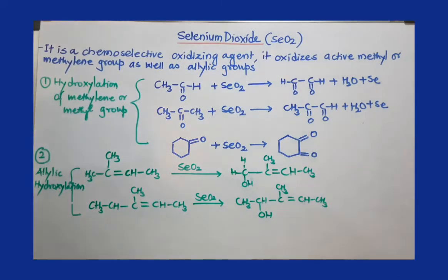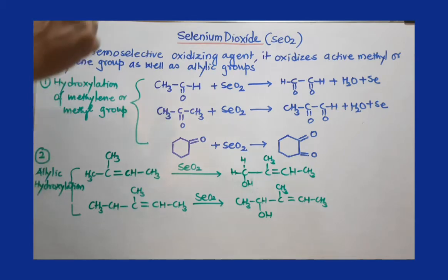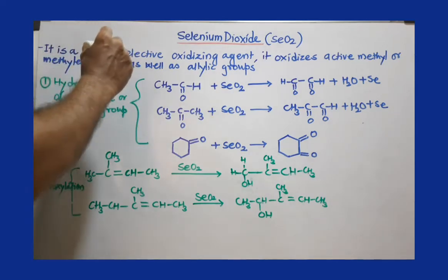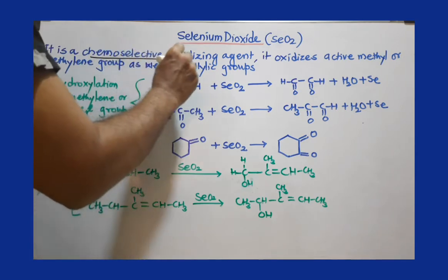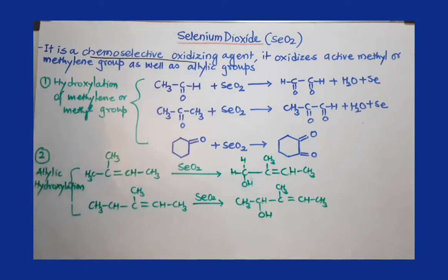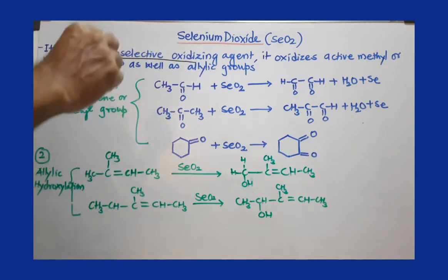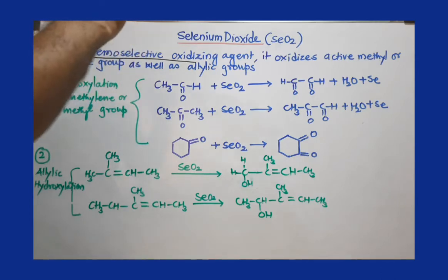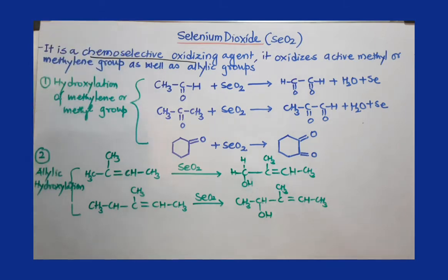In this video we are going to discuss selenium dioxide, which is used as an oxidizing agent. But this is not just an oxidizing agent — this is a chemoselective oxidizing agent. A chemoselective oxidizing agent selects a particular site of the molecule for oxidation, making it very useful.